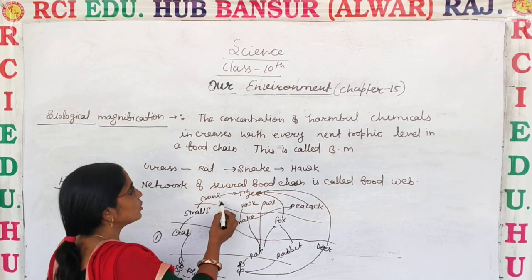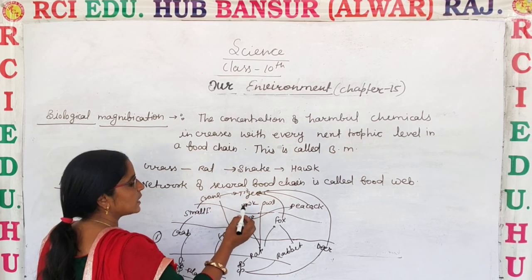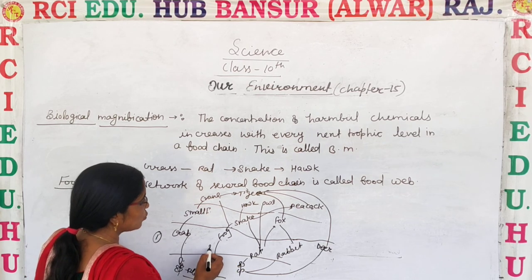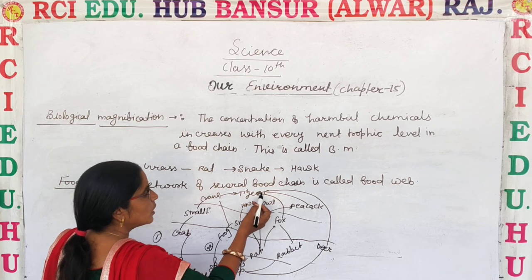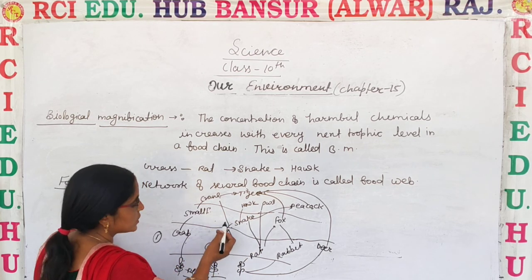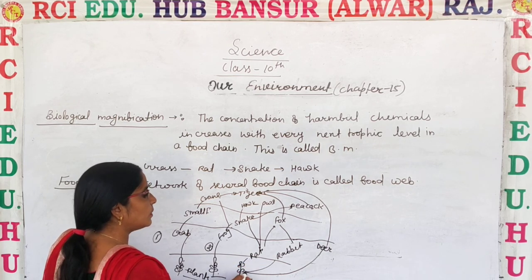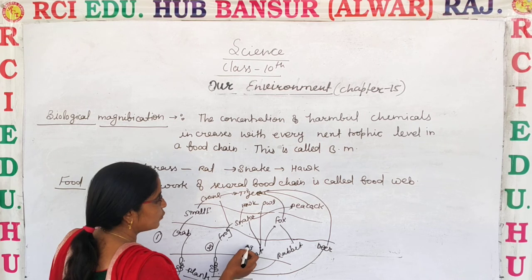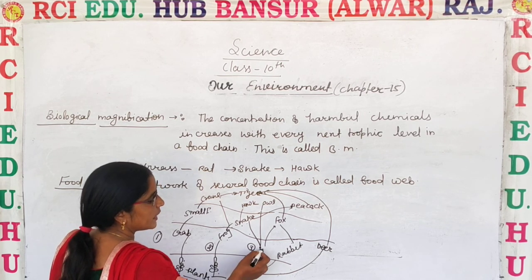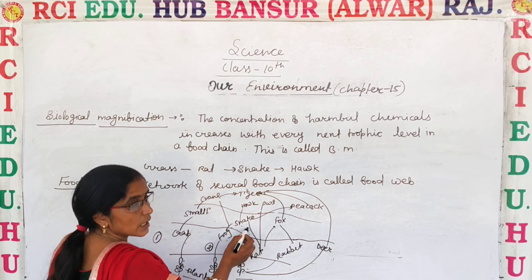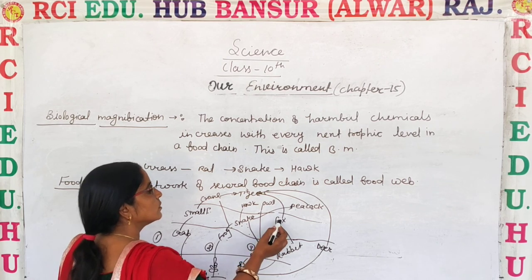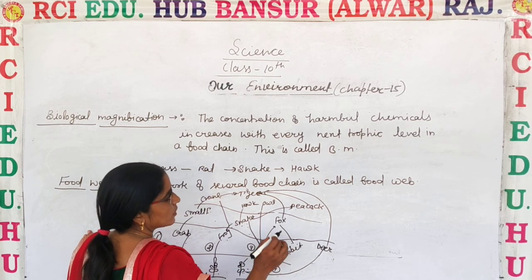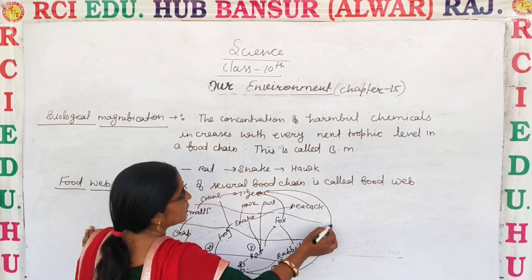Continuing the second chain: snake is eaten by the crane, crane is eaten by the tiger. There is also a peacock in the chain. The snake can also be eaten by the fox, and the tiger can also eat the fox. The third food chain: the plant is eaten by the rabbit, and the rabbit is eaten by the fox.